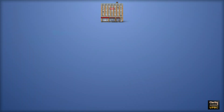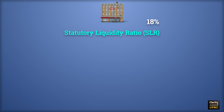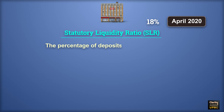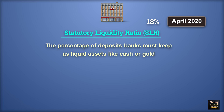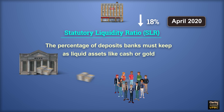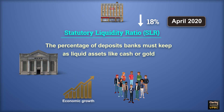Next is Statutory Liquidity Ratio or SLR. It is 18% at present and has not changed since April 2020. SLR means the percentage of deposits banks must keep as liquid assets like cash or gold. If this ratio is lowered, banks can lend more money. More lending boosts economic growth but also increases inflation.